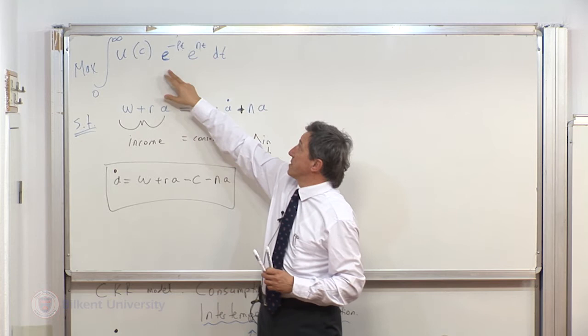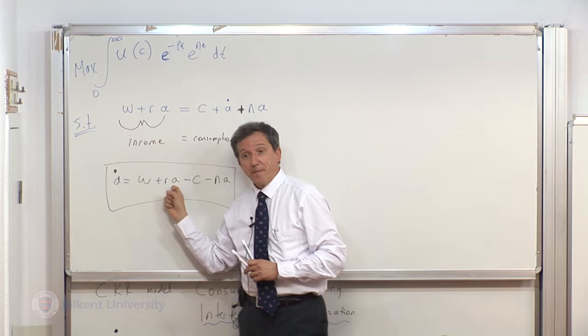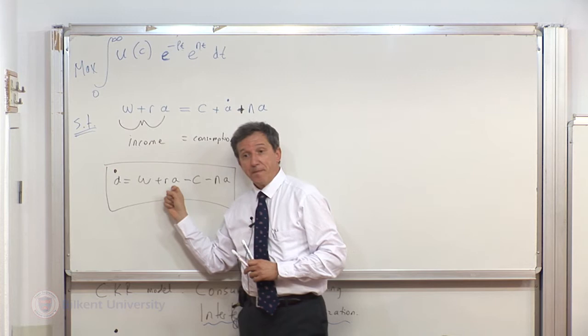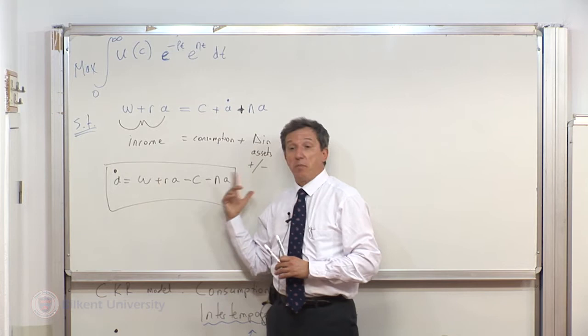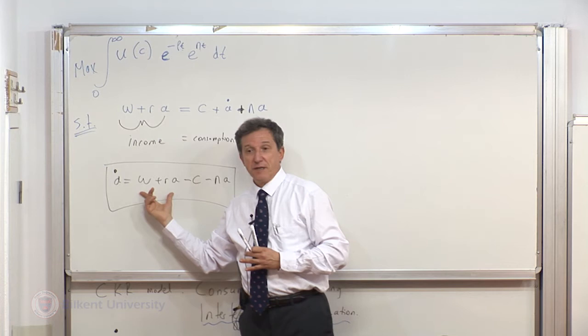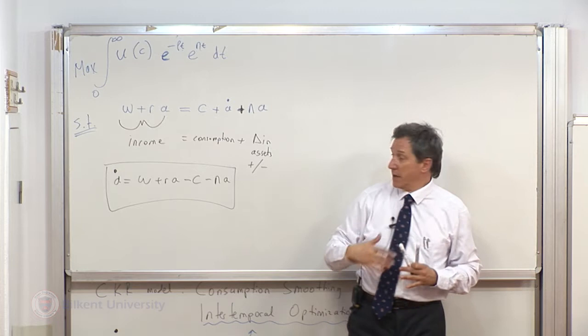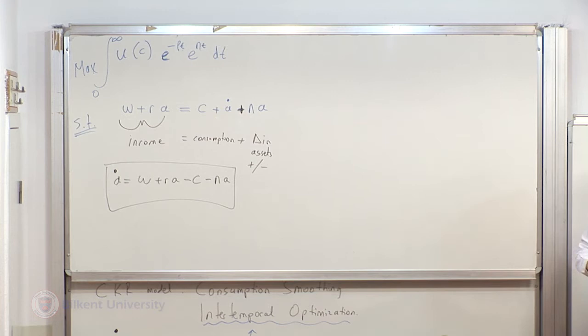So the household is maximizing utility — discounted and expanded by the number of newborn individuals — subject to the constraint that income from wages plus interest on assets, minus consumption, minus the inheritance of existing assets among newborns, determines whether you will save more or dissave. If this sum is positive, the household continues to save. If insufficient, it goes back to existing assets and decumulates them. If at par in every period, A-dot is zero. This is our framework.